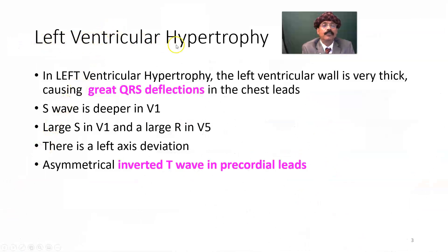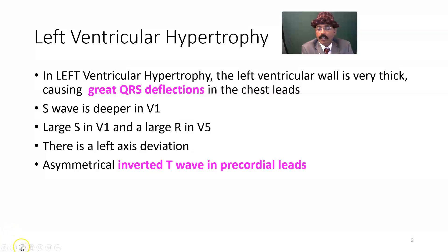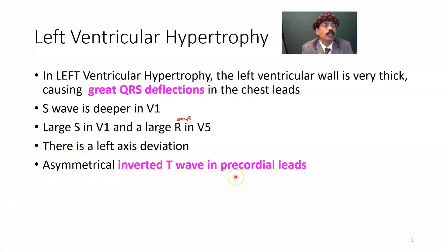Now we'll go to the ECG findings. In left ventricular hypertrophy, the left ventricular wall is very thick, causing great QRS deflection in the chest leads of the ECG. The S-wave is deeper in V1 and also in V2. There is a large R-wave in V5, and possibly V6. There is left axis deviation. Asymmetrical inverted T-waves are seen in precordial leads such as lead I, V5, V6, and AVL.